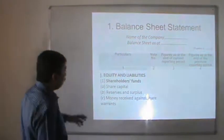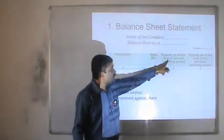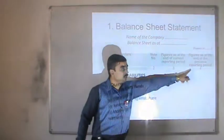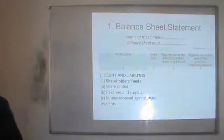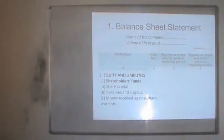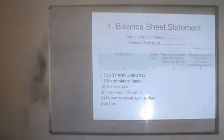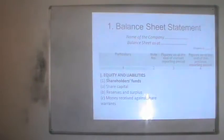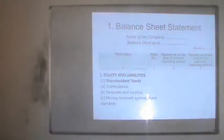In this format, we have the details, notes of accounts number, figures for the current year, and figures for the previous reporting period. The figures shown are for two consecutive financial years for comparison purposes. The liability side of the balance sheet starts as the first part — equity and liability — and within it, the shareholders' fund, which includes all amounts invested on behalf of the shareholders into the company.